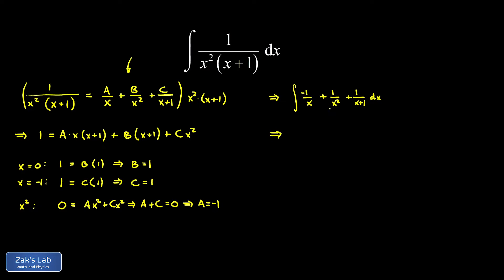Each of these pieces has a simple antiderivative. In our first piece, we end up with negative natural log absolute value of x. In our second piece, we're integrating x to the negative 2, which integrates to x to the negative 1 over negative 1, or negative 1 over x. In our third piece, we have the natural log of the absolute value of x plus 1. It's an indefinite integral, so we have a plus c tacked on.